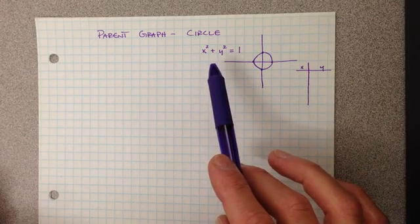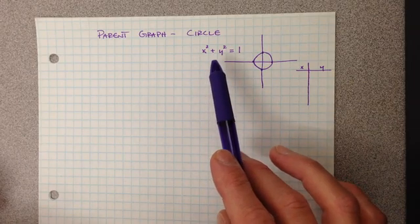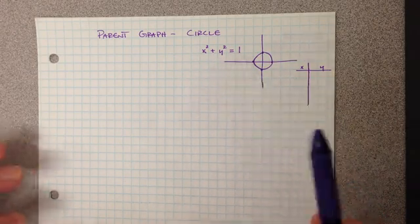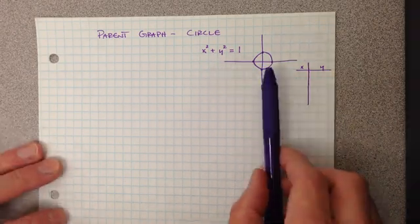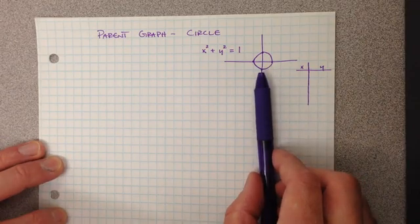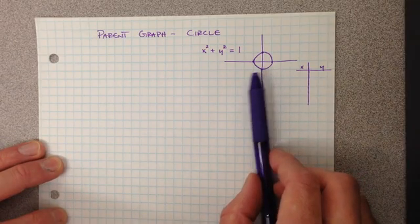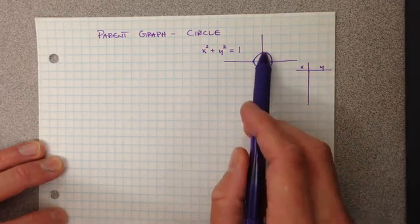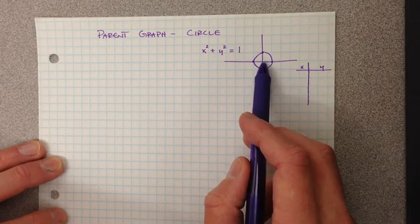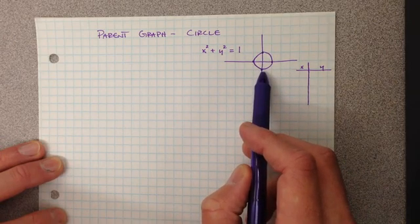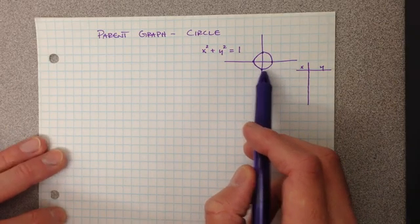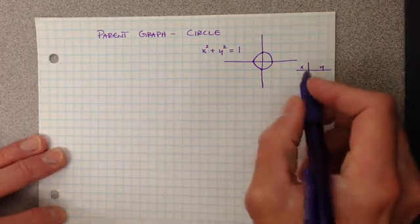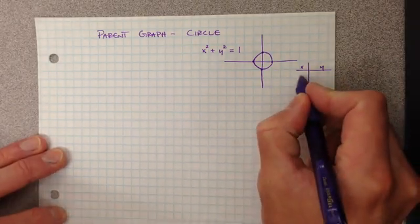It is not a function, so I can't call it the mother function. First of all, it doesn't pass the vertical line test. You could look at the x-value of zero, and we can look at that here on our xy chart.